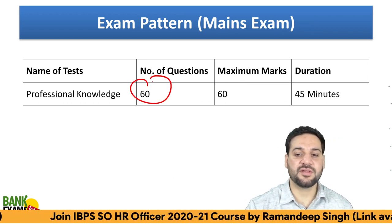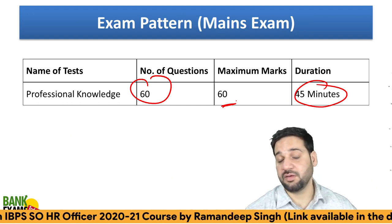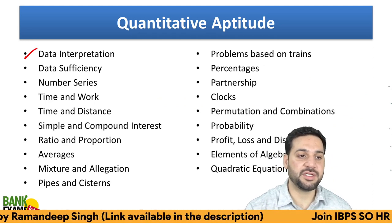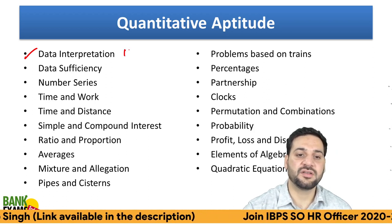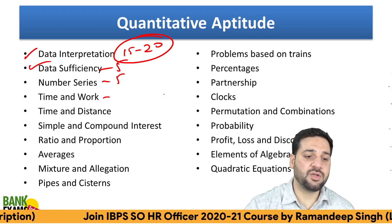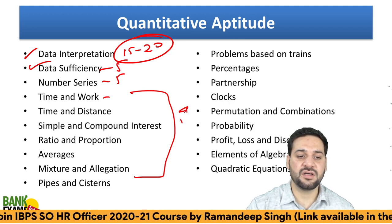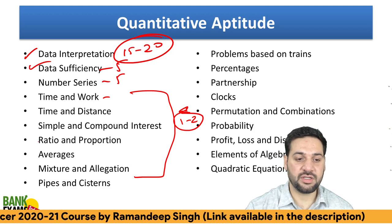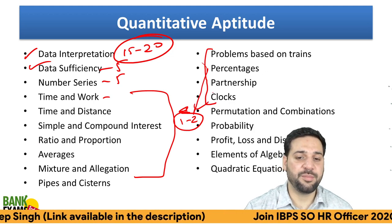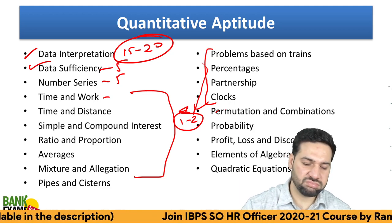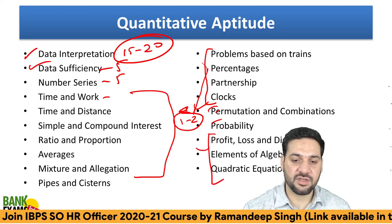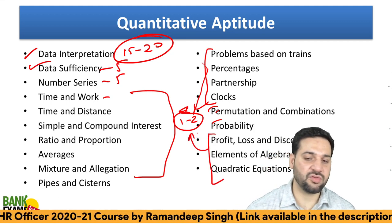For the mains exam: 60 questions, 45 marks, 1 mark each. In the Quantitative Aptitude section for the pre-exam, there are 50 questions — 3 to 4 sets of Data Interpretation (15–20 questions), 5 Data Sufficiency, 5 Number Series, and 1–2 questions each from: Time & Work, Time & Distance, Simple & Compound Interest, Ratios, Averages, Trains, Mixture & Alligation, Pipes & Cisterns, Partnership, Clocks, Permutation & Combinations, Probability, Profit & Loss, Algebra, and Quadratic Equations.